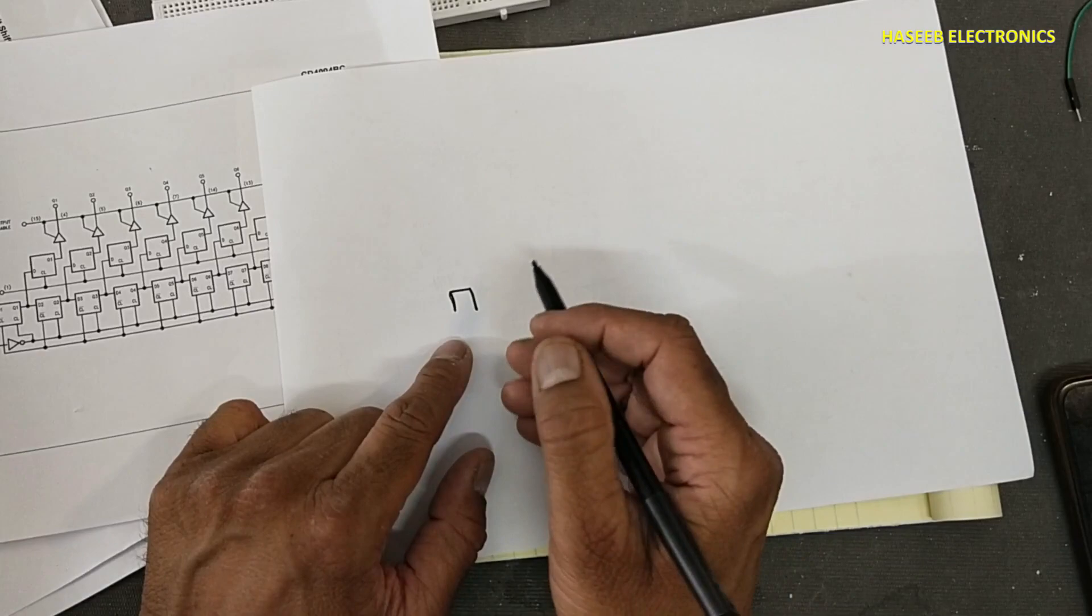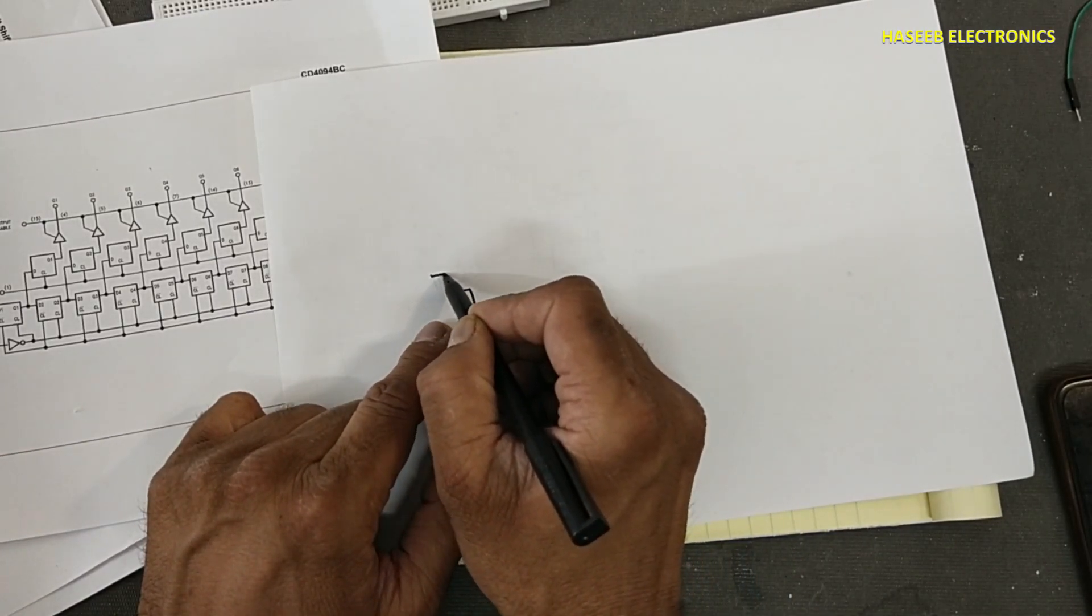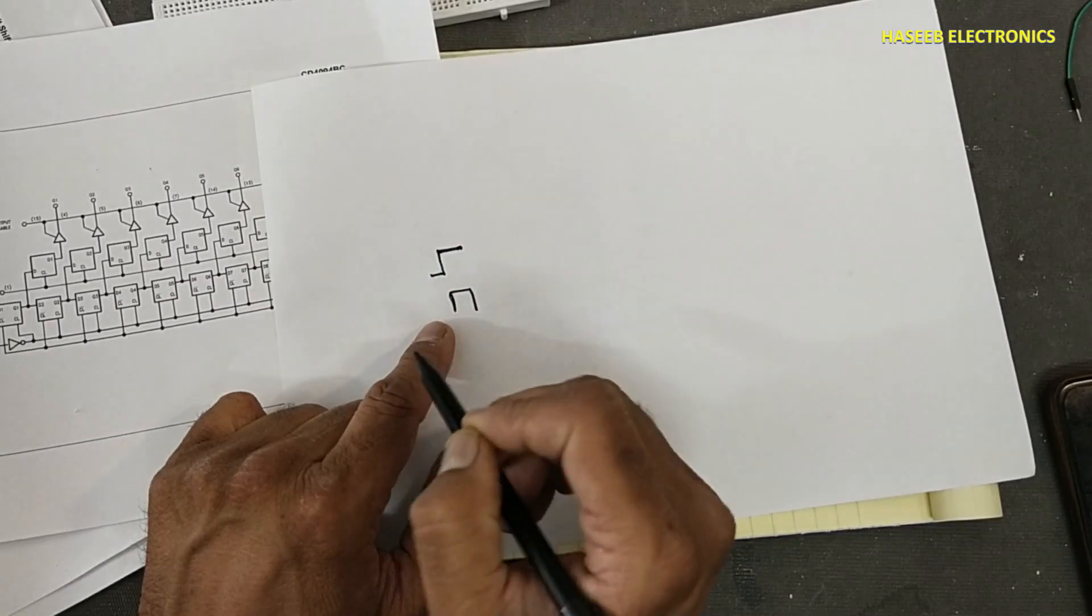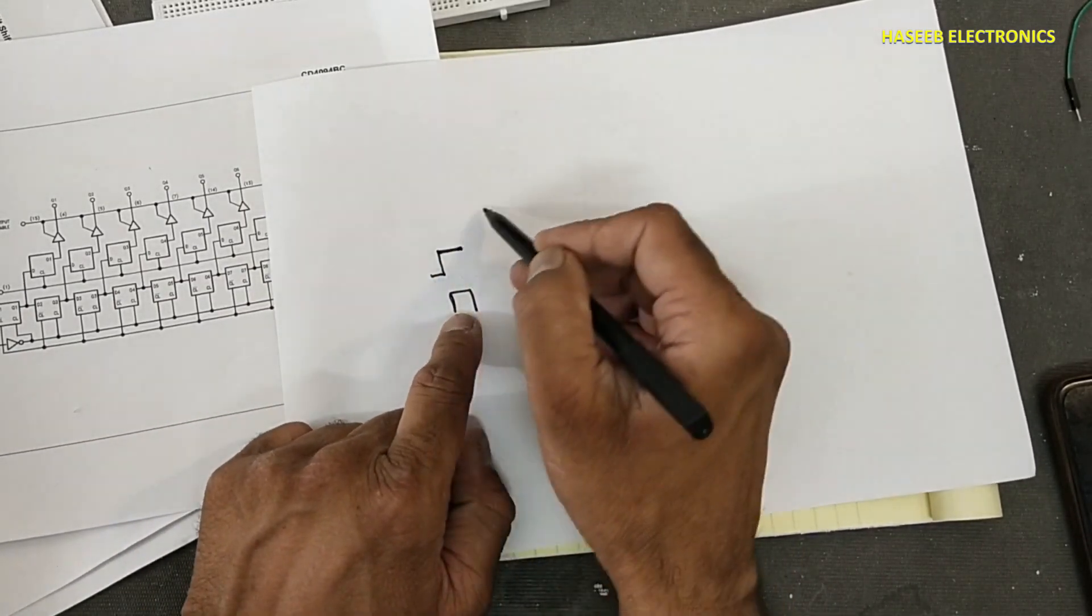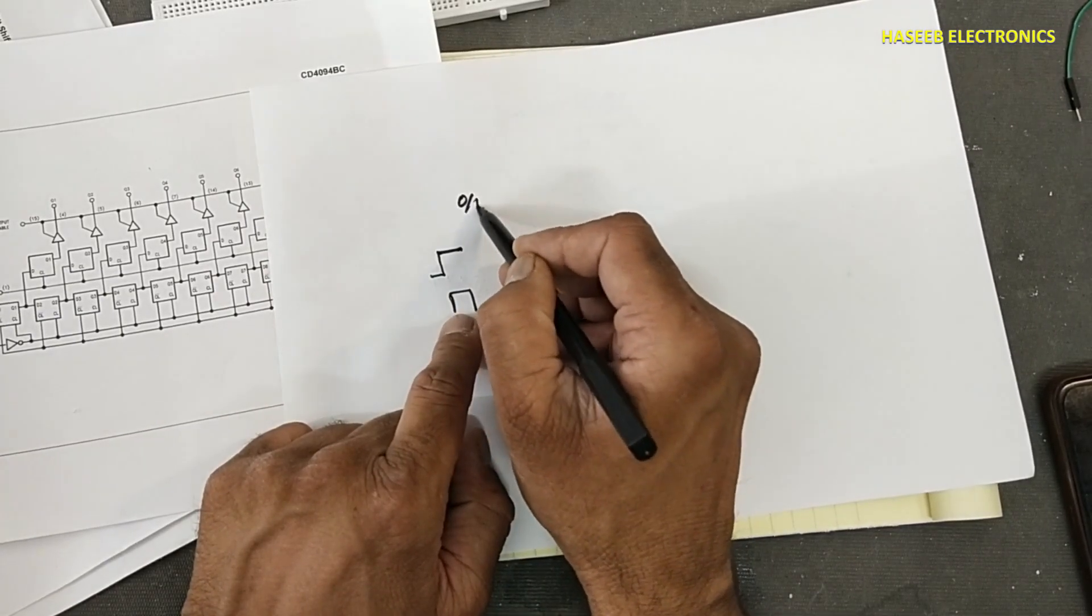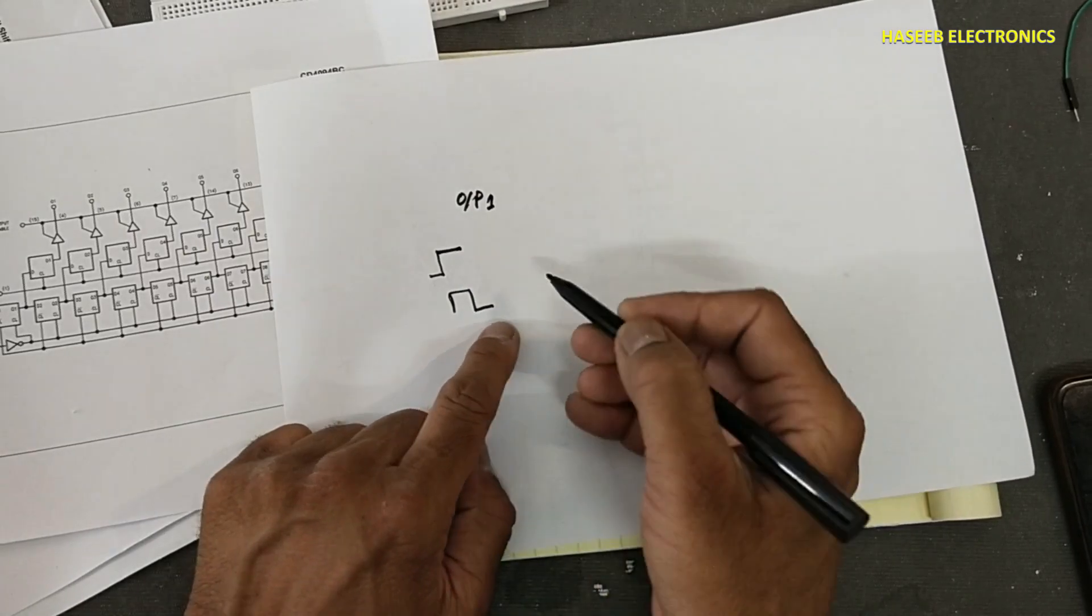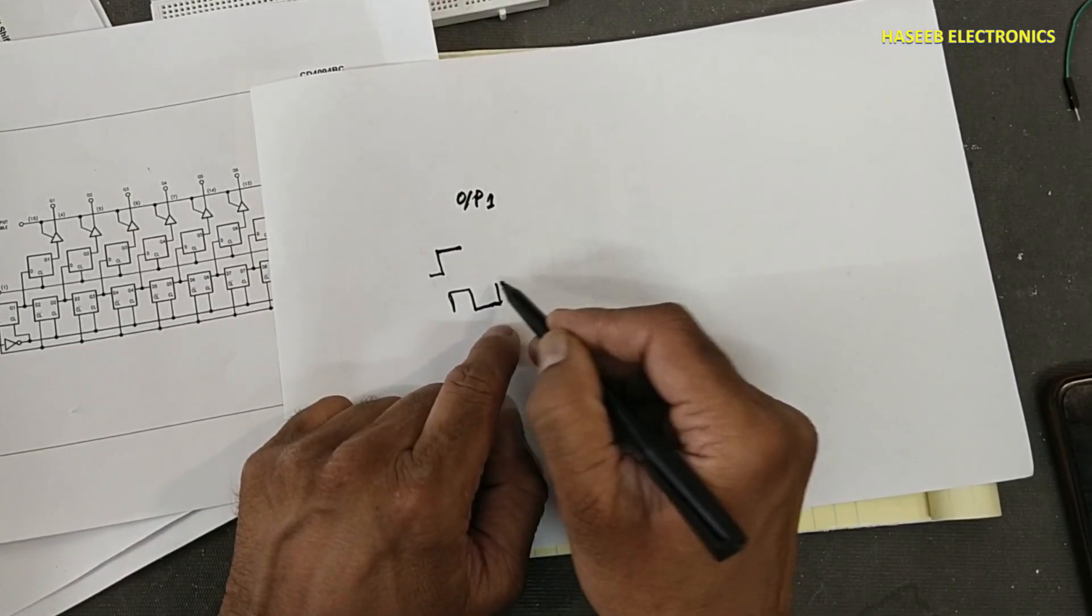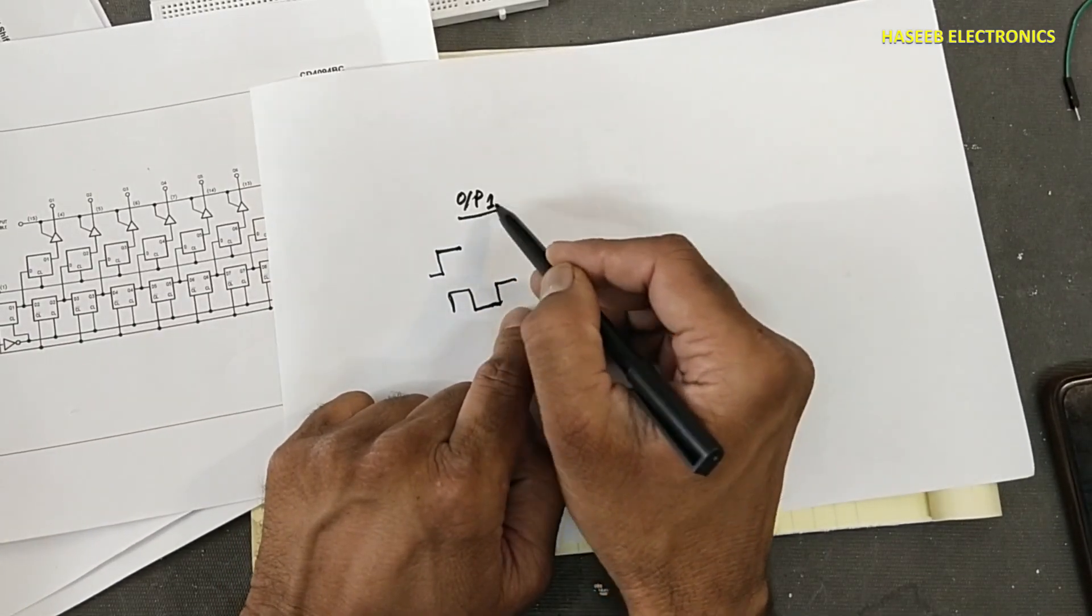This is clock pulse. If we inject some data, before this it was low, now it is high. When it is high, in this clock pulse this data will go to output number one. Then the next clock will change. At next clock when the clock will go high, this data will go to output number two.